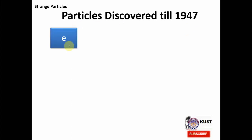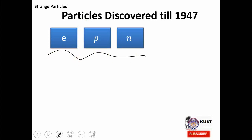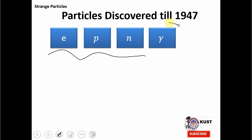The first particle known to us is the electron in the modern era of particle physics. Then we had a proton and a neutron. These three particles actually constitute an atom and are responsible for the structure of the atom. And then we had a slightly different particle called the photon. This photon is actually a mediator of the electromagnetic interaction — that is, when two charged particles exert force on each other, they exchange this photon for the Coulomb interaction.